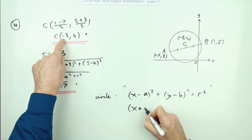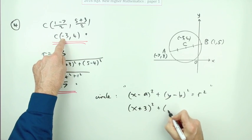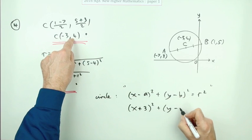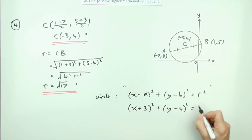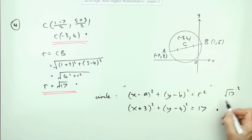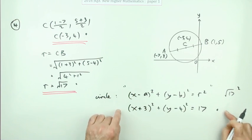So it's x take away negative three. To save for writing it all again, I think I'll just jump in with plus three. y minus the y coordinate, y minus four squared equals R squared, which puts that back up to 17. That's the third mark. Don't leave it as root 17 squared. It's the square of the radius, yes, and the radius is root 17. But if you leave it like that, you won't get this mark. You have to simplify that down to 17.